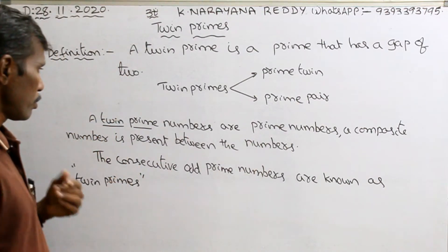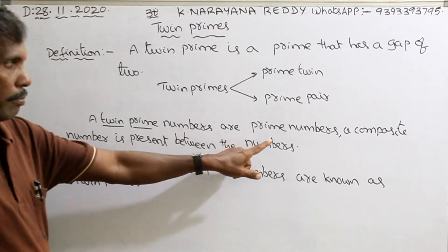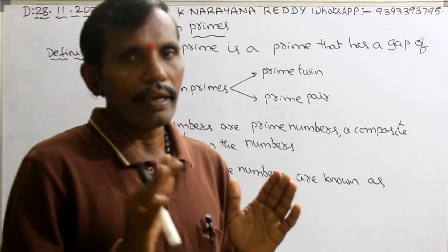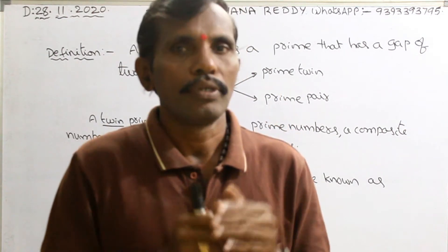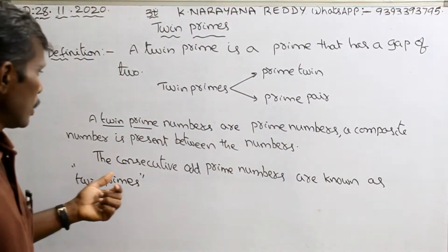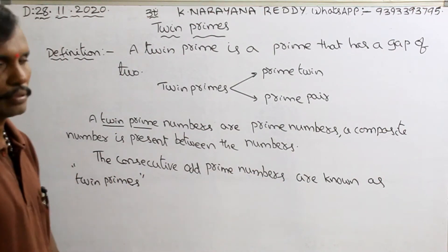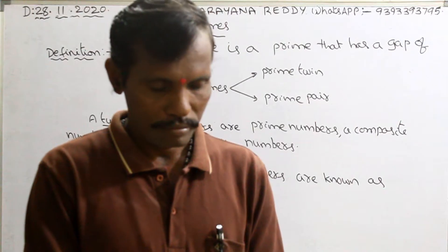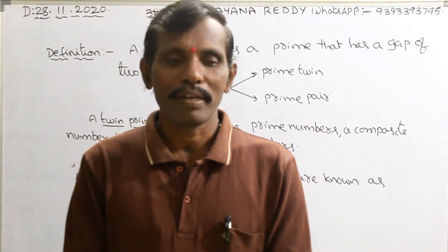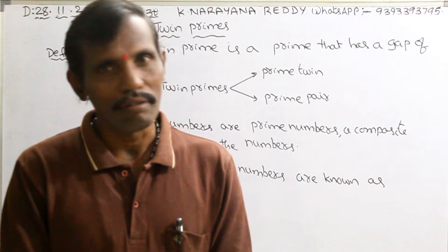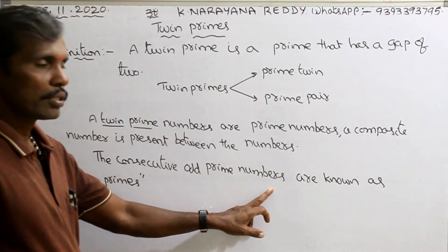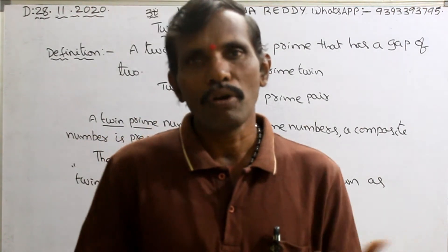Another definition: twin prime numbers are prime numbers with a composite number present between them. For example, if A and B are prime numbers and there is a composite number between A and B, that is a twin prime. Next definition: consecutive odd prime numbers are known as twin primes.